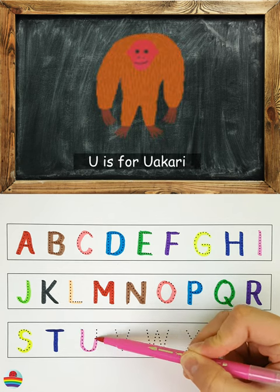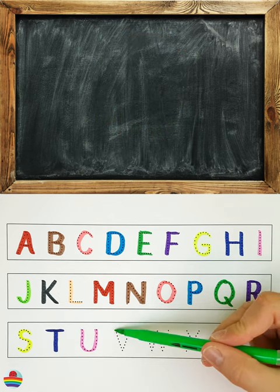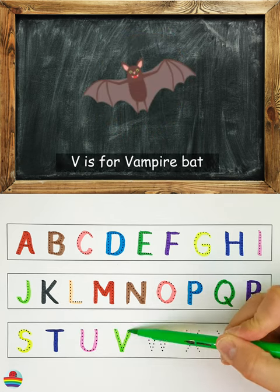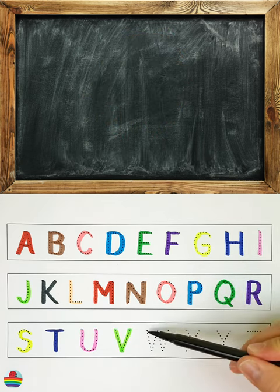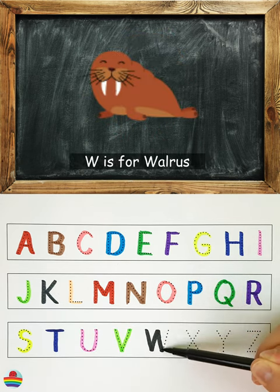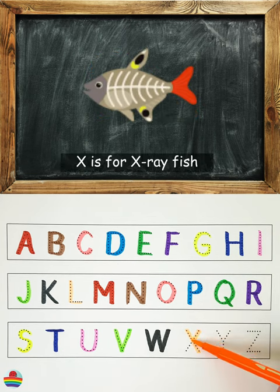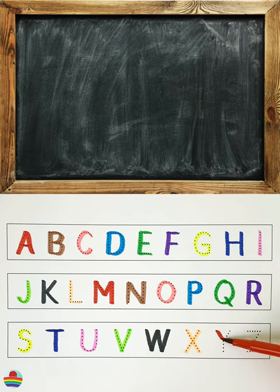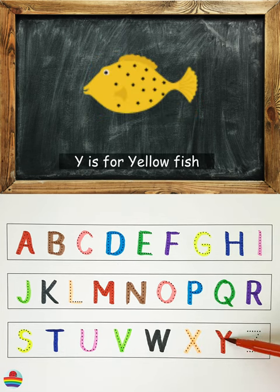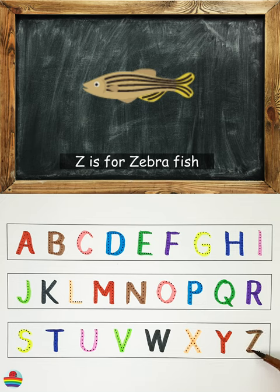U is for uakari, U. V is for vampire bat, V. W is for walrus, W. X is for x-ray fish, X. Y is for yellowfish, Y. Z is for zebrafish, Z.